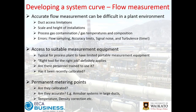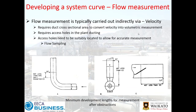Permanent metering points are another option — are they calibrated and accurate? Annubar systems in large ducts are a good example: if duct flow isn't uniform, are they located in a good spot? Flow meters also require density, temperature, and pressure corrections. Flow measurement is typically done via velocity, requiring a cross-sectional area for volumetric conversion. Access holes need to be in appropriate places — generally at least one to a few duct diameters from bends, transitions, dampers, and valves.